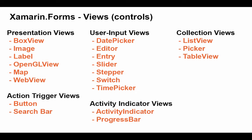Then we have views that trigger some type of action. The most common is a button, but we also have a search bar to search a page for a word or phrase. We can also gather input from users with views such as a date picker or a time picker. An editor is a multi-line text box, while an entry is a single-line text box for getting information from the user. We can use a slider to allow the user to pick between two numbers, a stepper to increase or decrease a number, and a switch to specify a Boolean value as true or false.